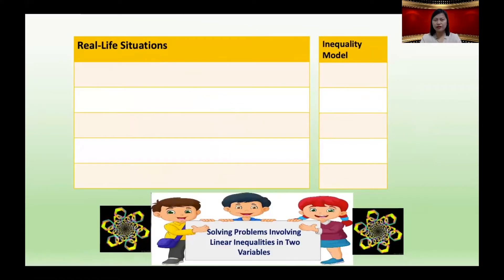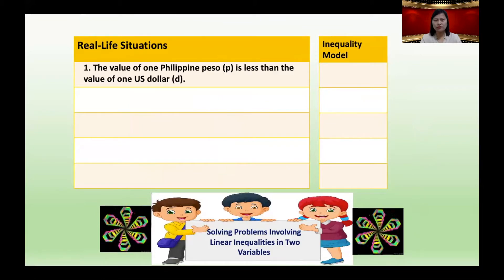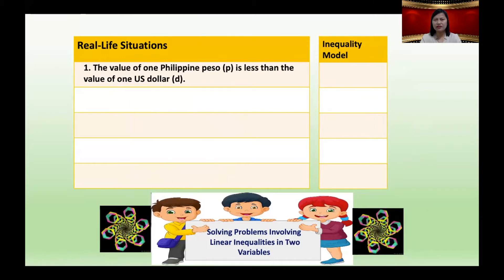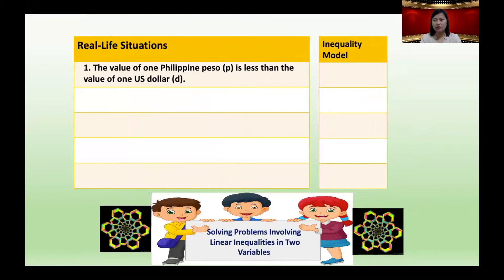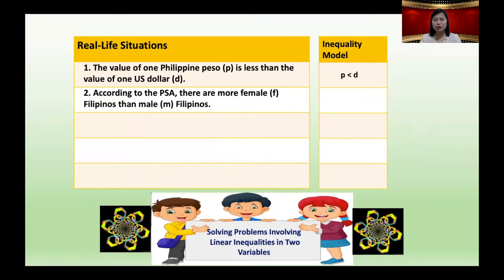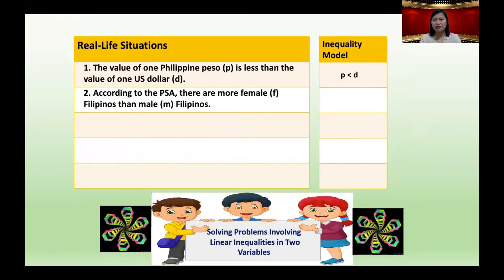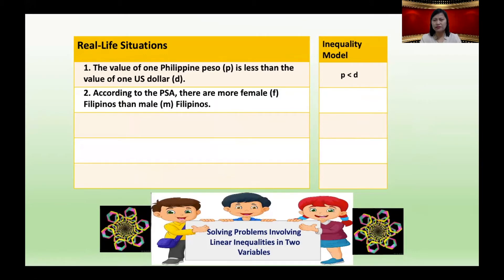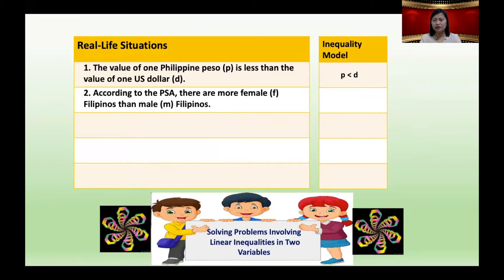Let's have the following real-life situations. Number one: the value of one Philippine peso P is less than the value of one U.S. dollar D. The inequality model: P is less than D. Number two: according to the PSE, there are more female F Filipinos than male M Filipinos. The inequality model: F is greater than M.